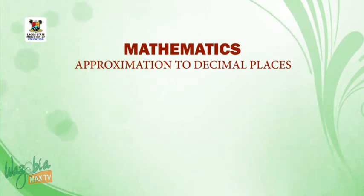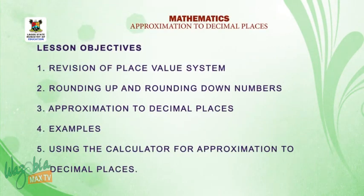First, let us take a look at the objectives of today's lesson. Number 1: Revision of place value system. 2: Rounding up and rounding down numbers. 3: Approximation to decimal places. 4: Examples. 5: Using the calculator for approximation to decimal places.